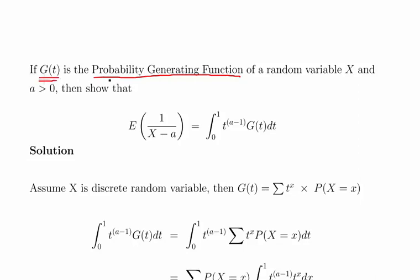So if g is a probability generating function of a random variable x and a is greater than 0, show that the expected value of 1 over x minus a is equal to the integral from 0 to 1 of t to the power of a minus 1 times g dt. Essentially what we're going to do here is work with this integral.